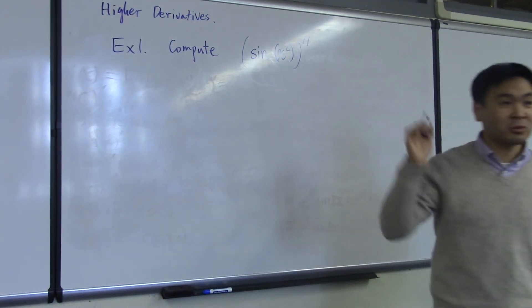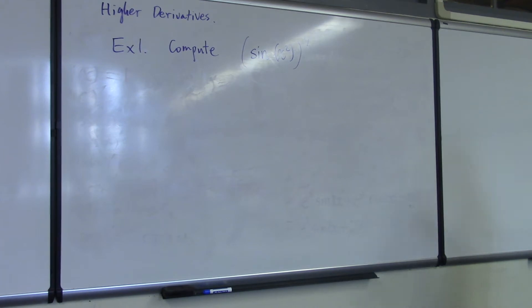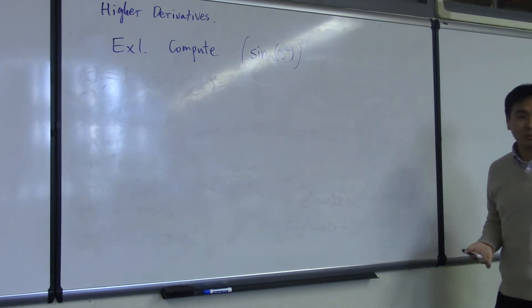So if you put double prime just like that, prime prime, that means you not only have to find one derivative, but you have to find two derivatives.